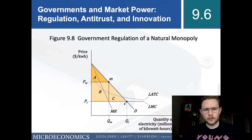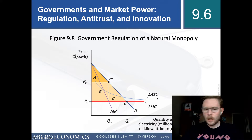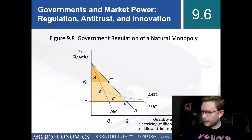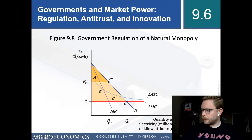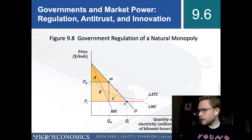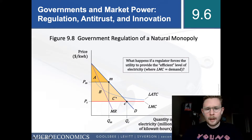What would that look like on the graph? We have the classic monopoly case, but we've added the long-run average total cost curve for this natural monopoly. Assuming we're operating in the monopoly case, we have our quantity Qm. Bringing up the lines to the demand curve gives us price Pm. Area A is the consumer surplus, B is the producer surplus, and C is the deadweight loss.